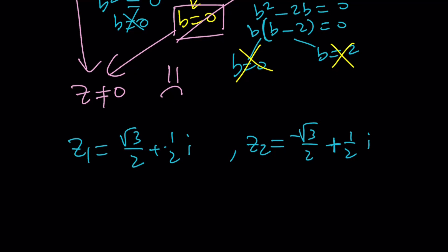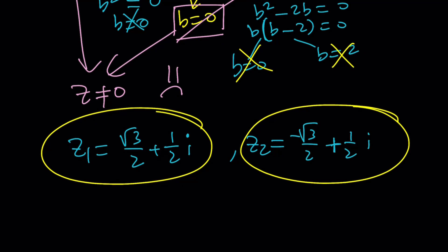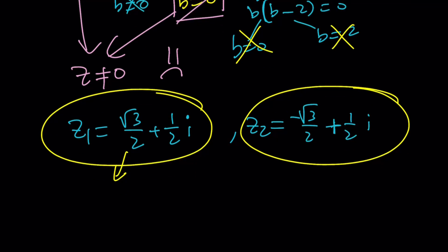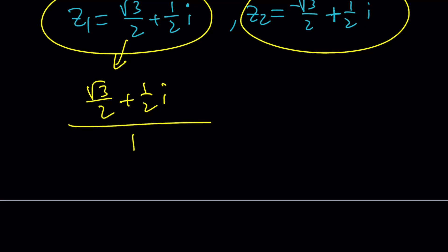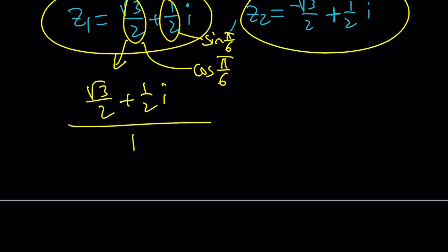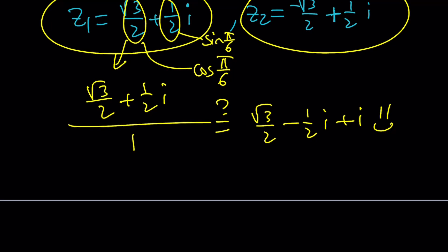Let's verify one of the solutions. We don't have to check both. If Z is root 3 over 2 plus one half i, plugging into Z divided by the absolute value of Z: notice the absolute value of Z is 1, because these are cosine and sine values — specifically cosine of pi over 6 and sine of pi over 6, so the sum of squares equals 1. Then Z divided by 1 equals the conjugate of Z plus I, which checks out. The other solution works the same way with alternating signs.